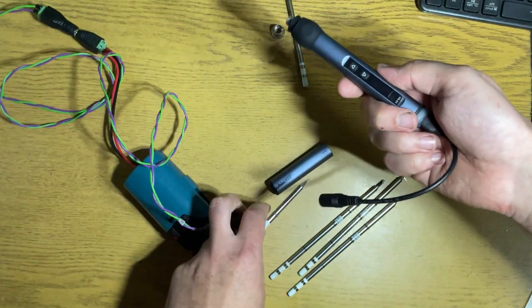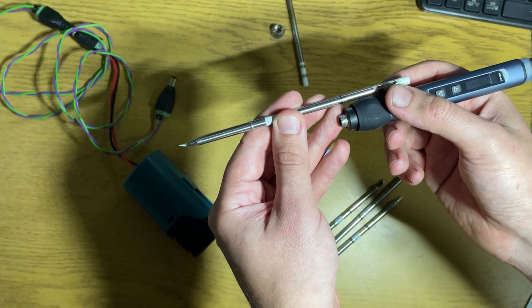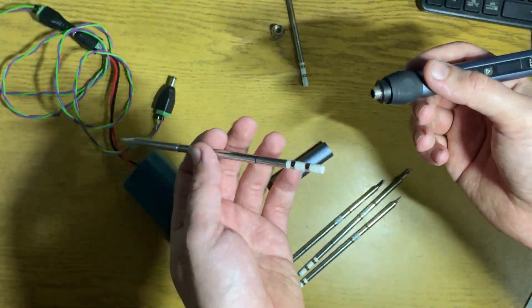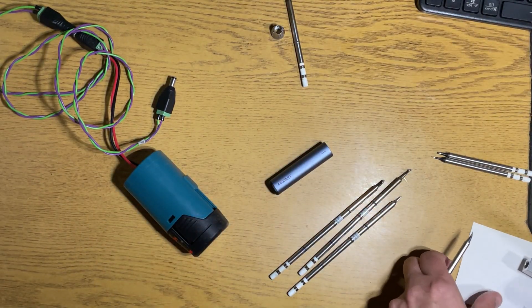But the thing is that after some time when you work with this, it goes more inside and loses contact, and then it will stop heating. To prevent this, I made one part of aluminum.